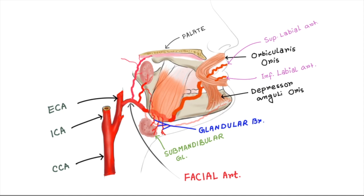The inferior labial artery passes upward and forward under the depressor anguli oris muscle and penetrates the orbicularis oris muscle. The superior labial artery has the same relation with the orbicularis oris and depressor anguli oris muscles. The inferior labial artery supplies the inferior labial glands, mucous membrane, and muscles of the surrounding area.